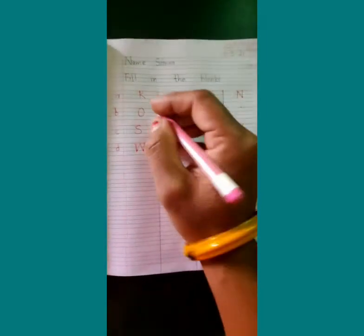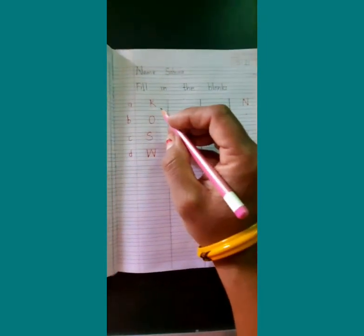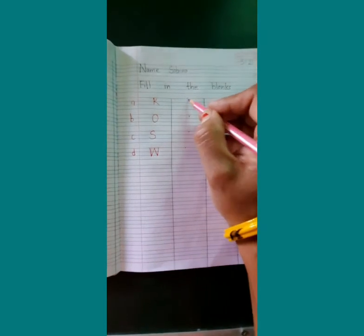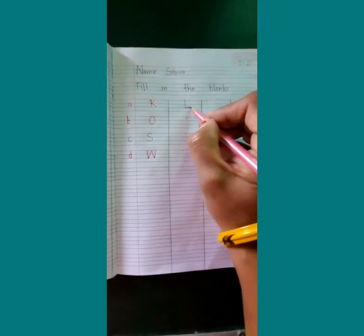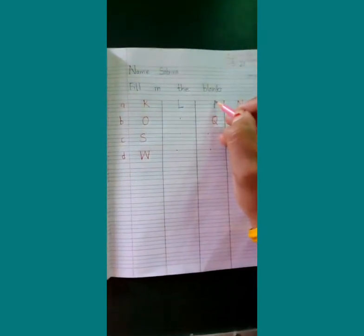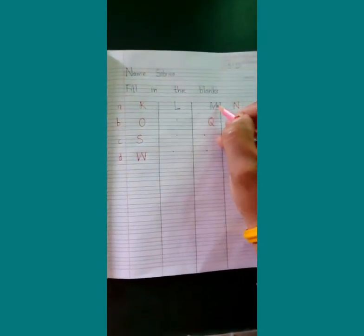Fill in the blanks. So children we will say what letter is this? K. After K children, L. After L children, M. Now N is written here children.